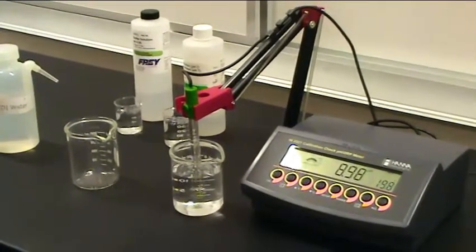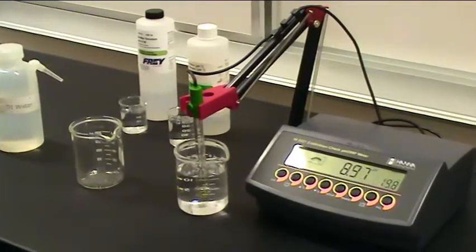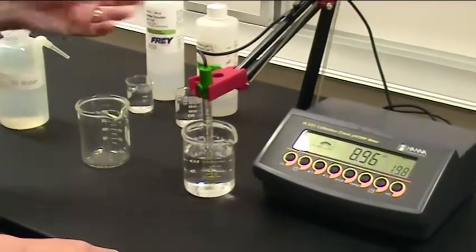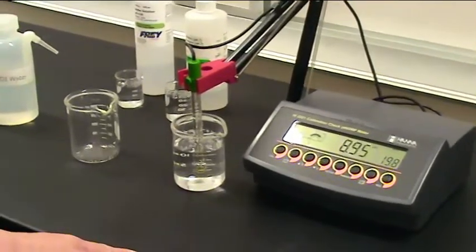Before using a pH meter, it's not going to read properly unless it's calibrated first. So the proper way to calibrate is to have two or three calibration solutions ready to go.